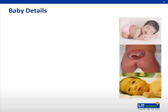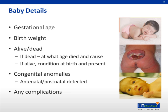Now let's look at the baby details. For all babies, we need to know the gestational age at birth, the birth weight, whether the baby is currently alive or dead — and if dead, at what age and cause of death — and if alive, the condition of the baby at birth and at present. We also need to know if there are any congenital anomalies and whether they were detected antenatally or postnatally, and if there were any neonatal complications, for example neonatal jaundice requiring admission to the unit.